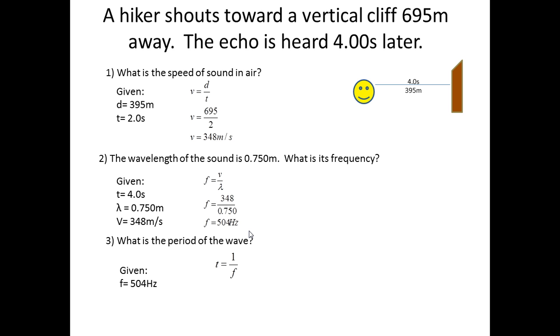Using the formula of period equals 1 over frequency, we get period equals 1 over 504 hertz, which gives us 1.98 multiplied by 10 to the power of negative 3 seconds, which is also known as 1.98 milliseconds.